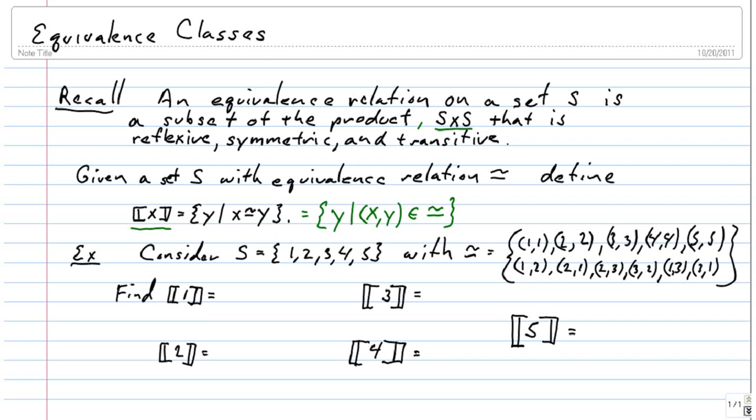And now let's think about what the equivalence class of 1 is. So the equivalence class of 1 should be everything that 1 is related to. So it's in essence the second of each ordered pair that starts with 1. So here's 1. 1 is related to 1. So 1 is in the equivalence class of 1. 1 is also related to 2. So 2 is in the equivalence class of 1. And then here's another one that starts with 1 and we get 3.